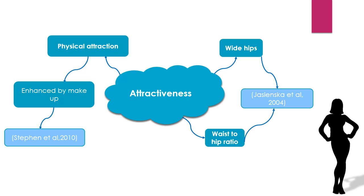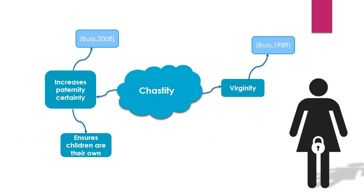As we've learnt so far, males are focusing a lot of their desires on females who can pass on their genes. The best way for this to happen is for their potential mate to be a virgin, as this gives them certainty that the child is actually their own, and therefore they avoid investing in a child that doesn't hold their genes.